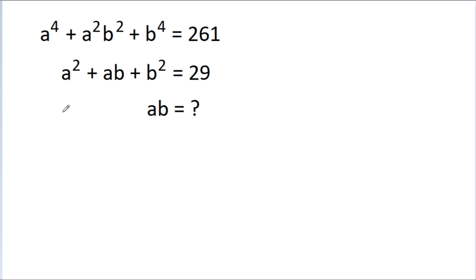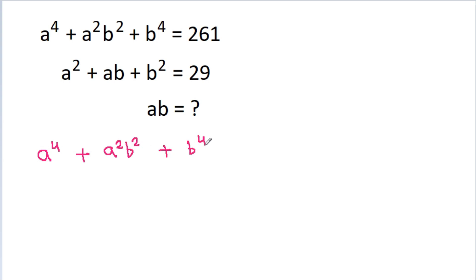So here we are given that a⁴ + a²b² + b⁴ = 261, and now we need to factor it.